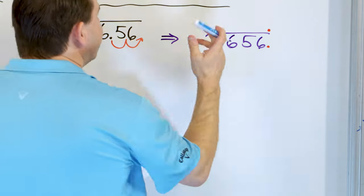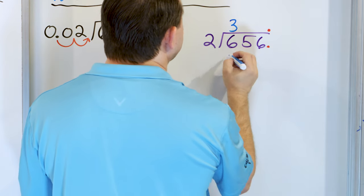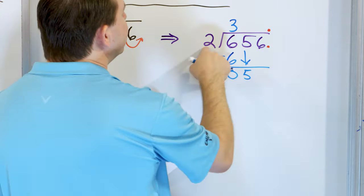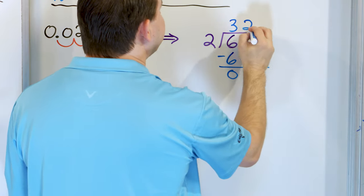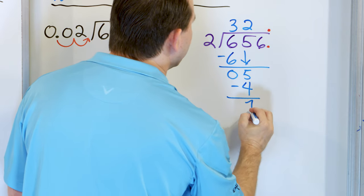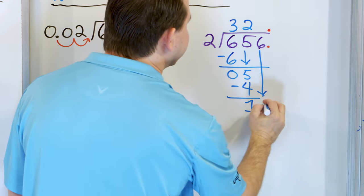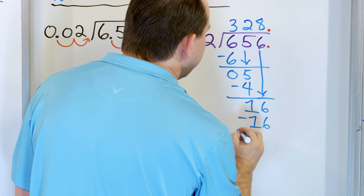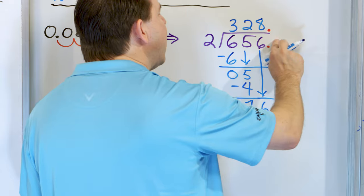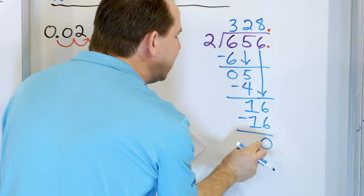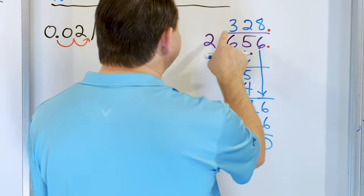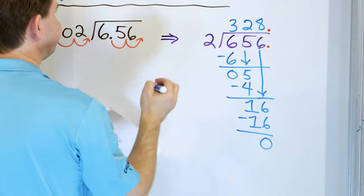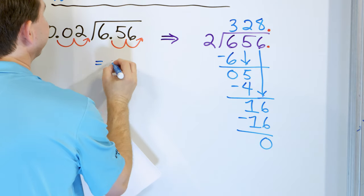Now I know there's an invisible decimal here, so the decimal floats right above. Alright: 2 times what is 6? 2 times 3 is 6. Multiply and subtract — I get zero. Drag the next digit down, which is then 5. 2 times what is 5? 2 times 2 is 4 — that's as close as I can get. Subtract — I get a 1. After subtraction, drag the next digit — now I have 16. 2 times what is 16? 2 times 8 is exactly 16. I get zero. Now I have a remainder of zero and don't have any more digits. So the answer is 328.